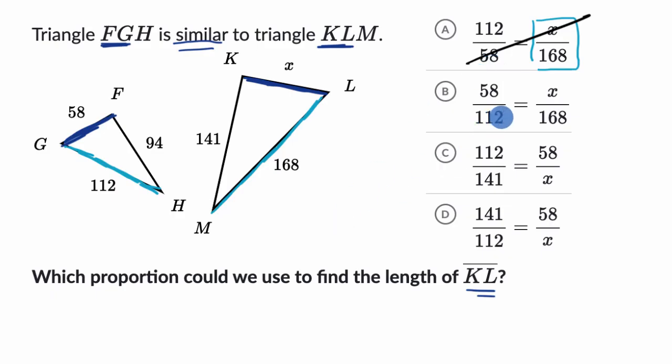Now, when we go to the second choice, this is looking pretty good. X over 168, that should be equal to the ratio of the corresponding sides in that same order in the other triangle. X over 168 corresponds to the X should be the 58, corresponding to the 168 should be the 112. So that should be equal to 58 over 112, which is exactly what this choice is.